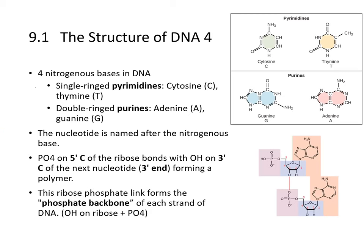The four nitrogenous bases in DNA include the single-ringed pyrimidines — cytosine and thymine — and the double-ringed purines — adenine and guanine. Here are the pyrimidines: cytosine and thymine. Here are the purines: guanine and adenine. The nucleotides themselves are named after their nitrogenous base.